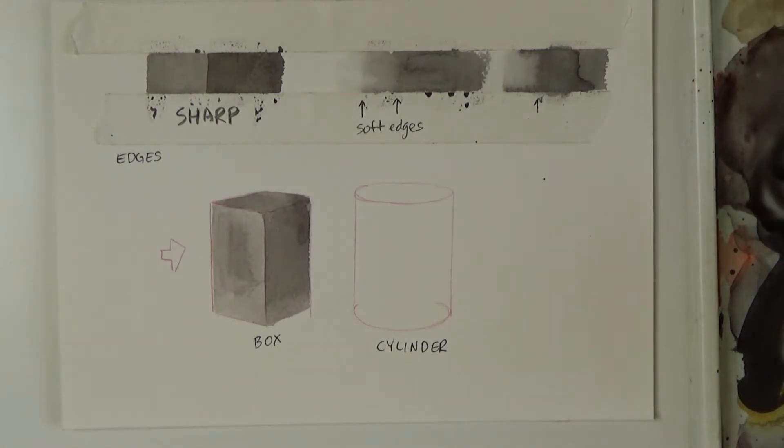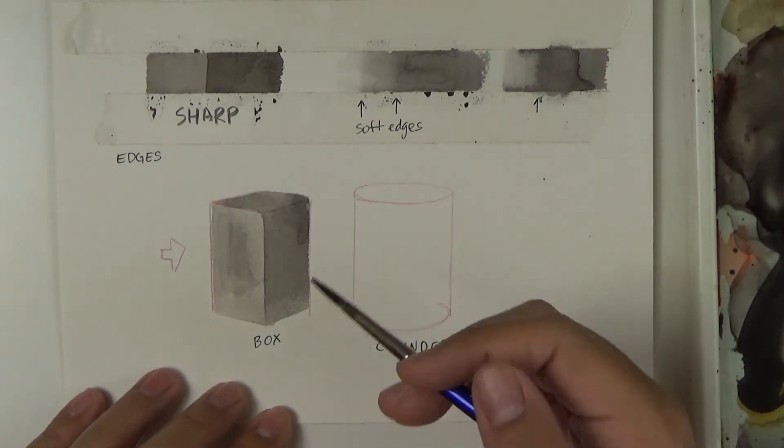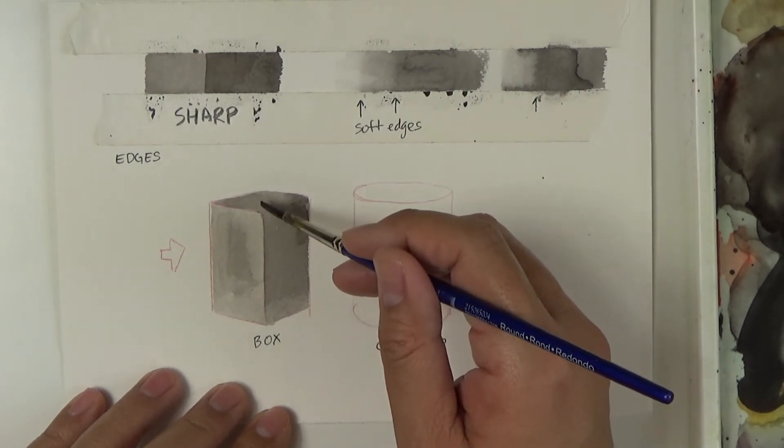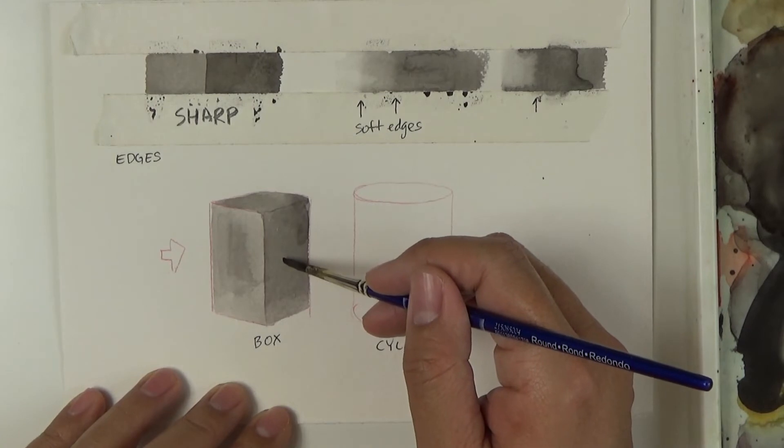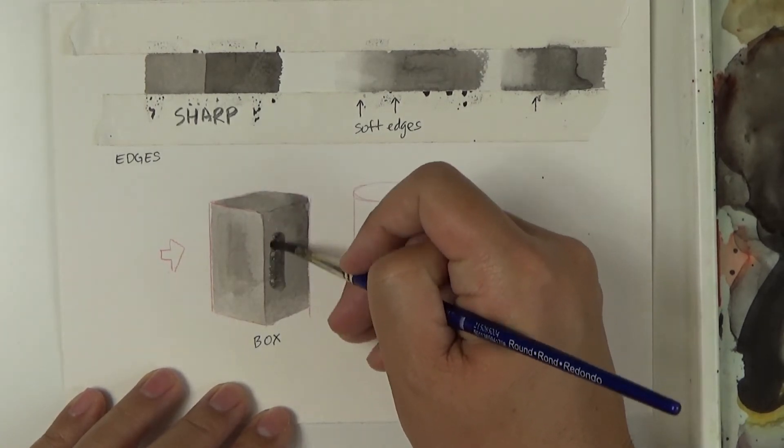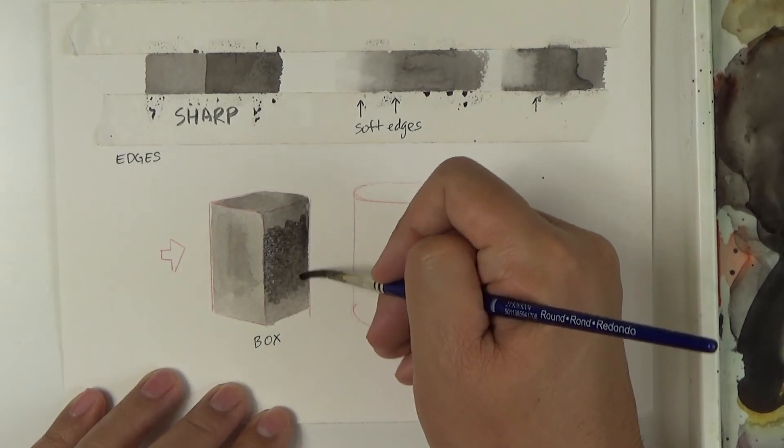Now once I have that, lighter gets a little darker here. And now I'm going to make this side here where it's facing away from the light go darker still. So we'll add our next layer.